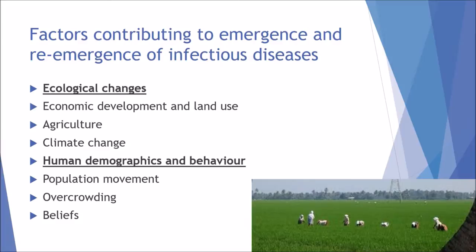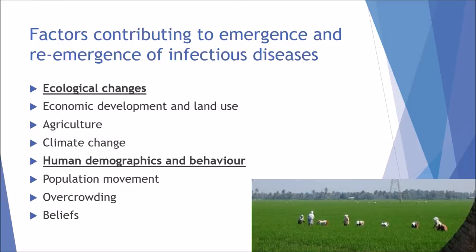Human demographics and behaviour also play a role — not just environmental changes but the actual behaviour of people. Population movement can aid disease transmission; for example, someone travelling from Africa to the UK who has been bitten by the Anopheles mosquito could still carry the malarial parasite and, if retransmitted, could cause another outbreak. Overcrowding means diseases spread more easily through respiratory or physical contact, and cultural beliefs — as seen with Ebola — can also contribute, which will be covered in the next video.